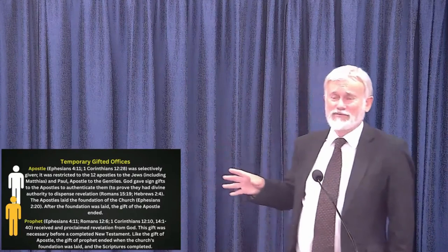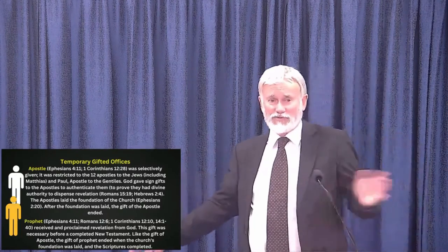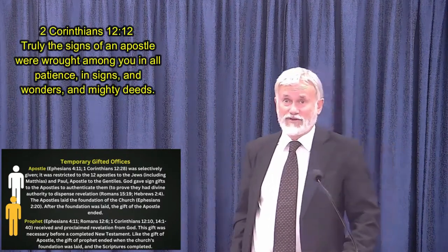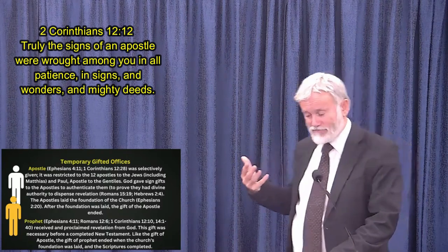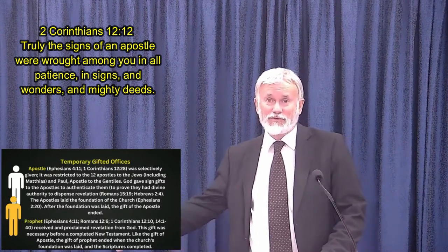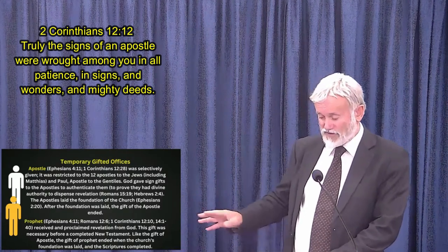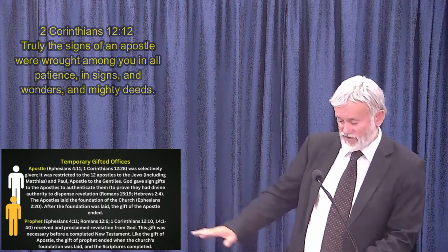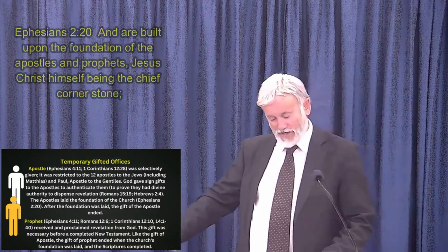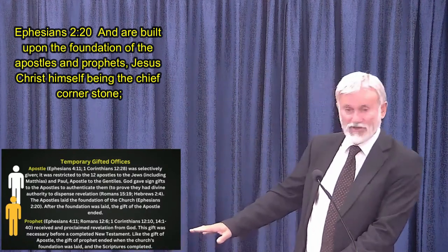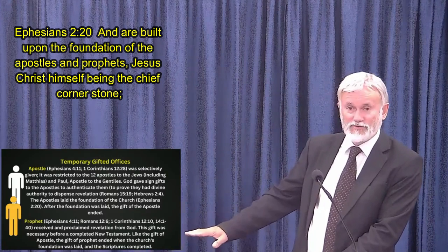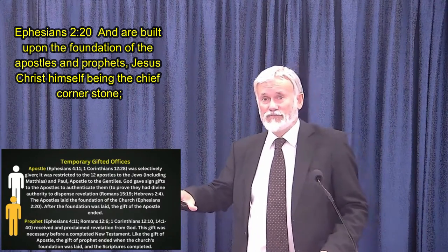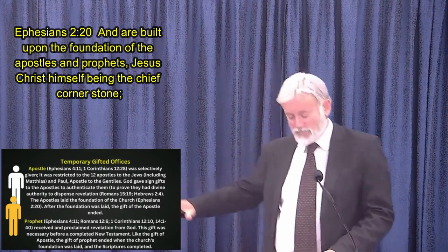Nowadays people take the title of apostle or prophet, which is quite presumptuous, because they're not showing the signs of an apostle as 2 Corinthians 12 describes. The gift of prophet, like the apostle, was temporarily used of God to lay the foundation of the church. Like the gift of apostle, the gift of prophet ended when the church's foundation was laid and the scriptures were completed — around AD 95. There's no need for further special revelation since we have the whole canon.